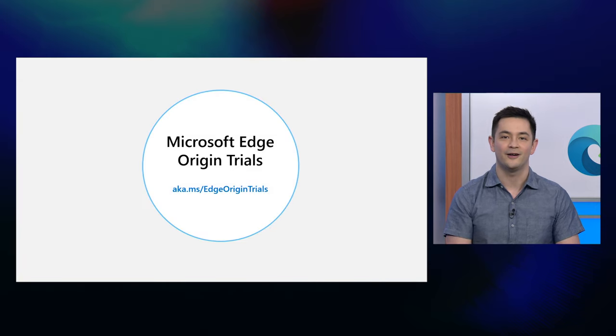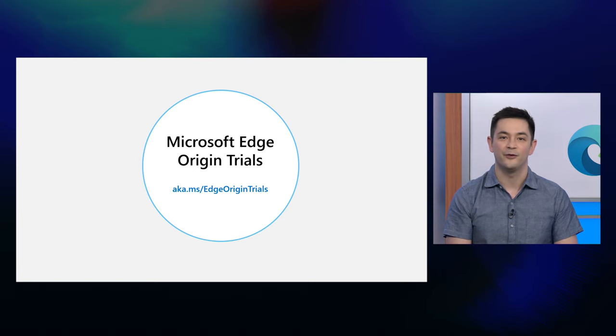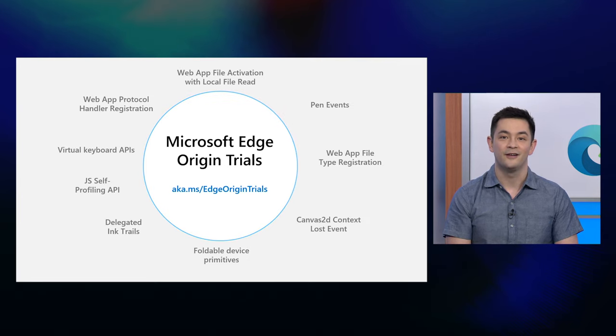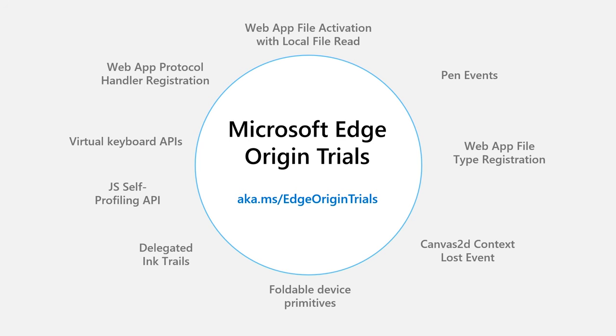Speaking of our dual screen APIs, these APIs, in addition to several others, were made available throughout the year for anyone to test early via origin trials. If you're not sure what origin trials are, they offer a way for developers to sign up to test and provide feedback on experimental web platform features before they're widely available. Last build, we announced our origin trials developer console, which lets developers sign up for origin trials specific to Microsoft Edge.